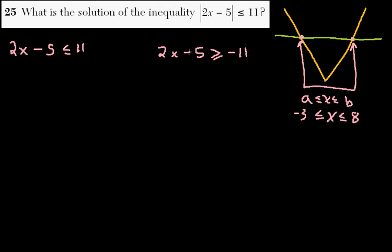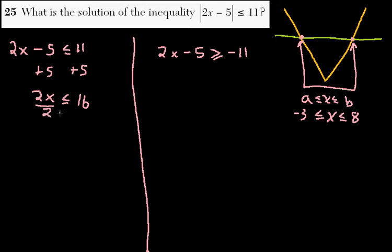So let me drive this down here. And then we just go about solving. Add 5 to both sides. Add 5 to both sides. We get 2x less than or equal to 16. We divide by 2, divide by 2, and we get x less than or equal to 8, just like we wanted.